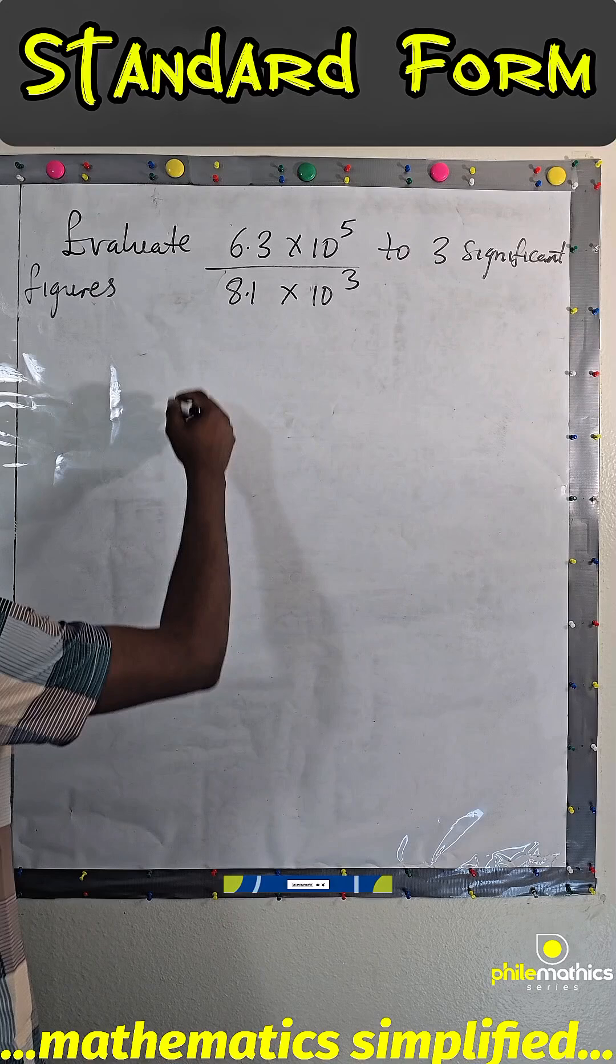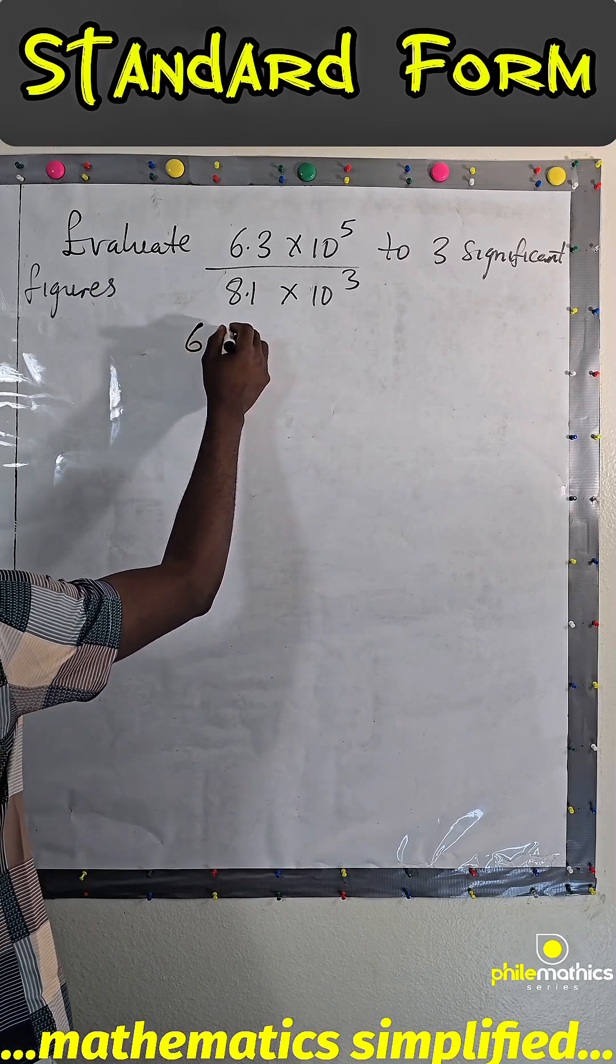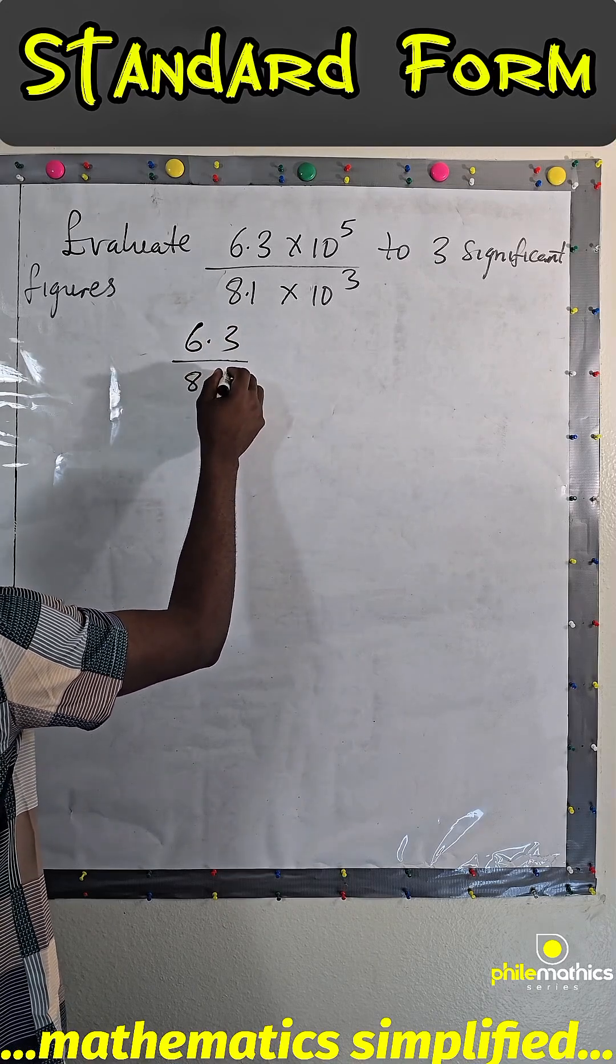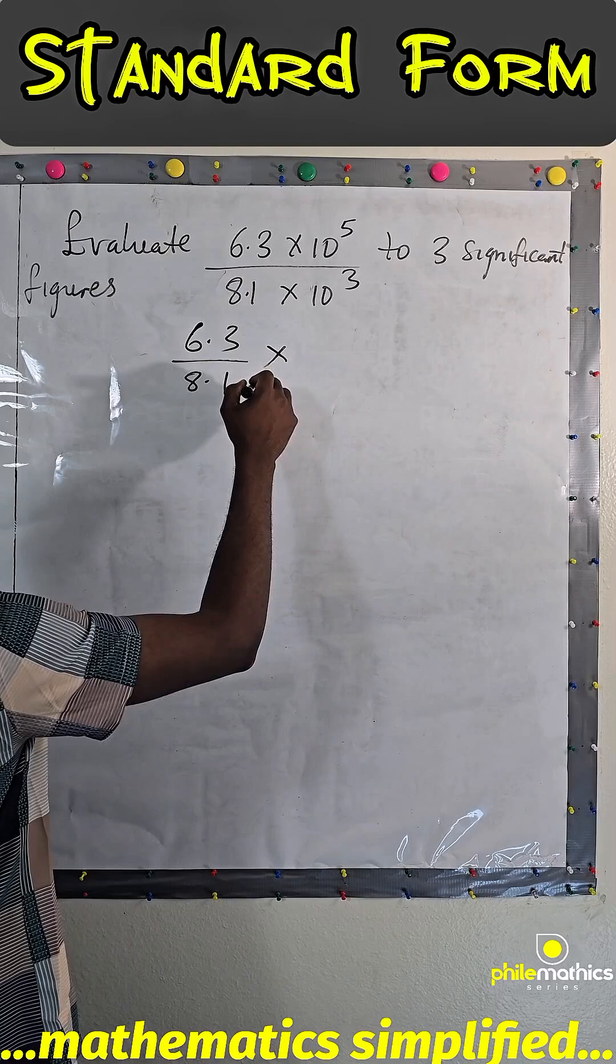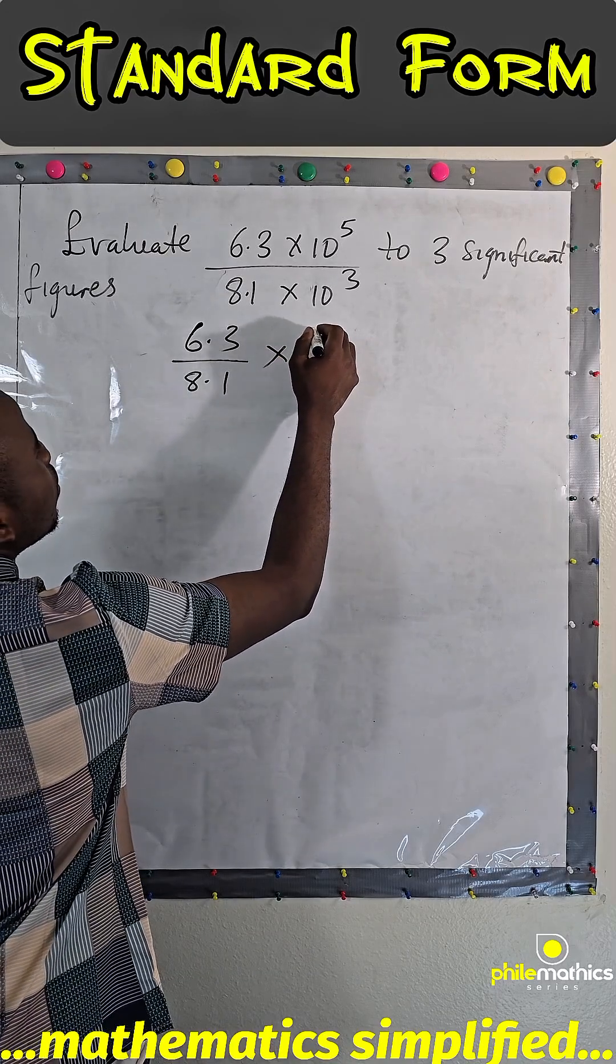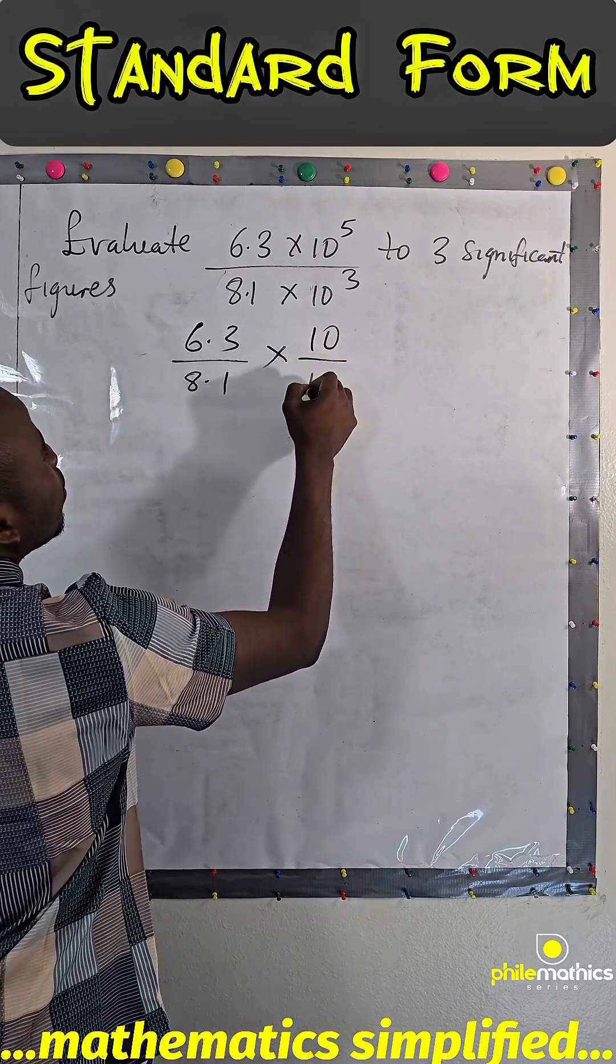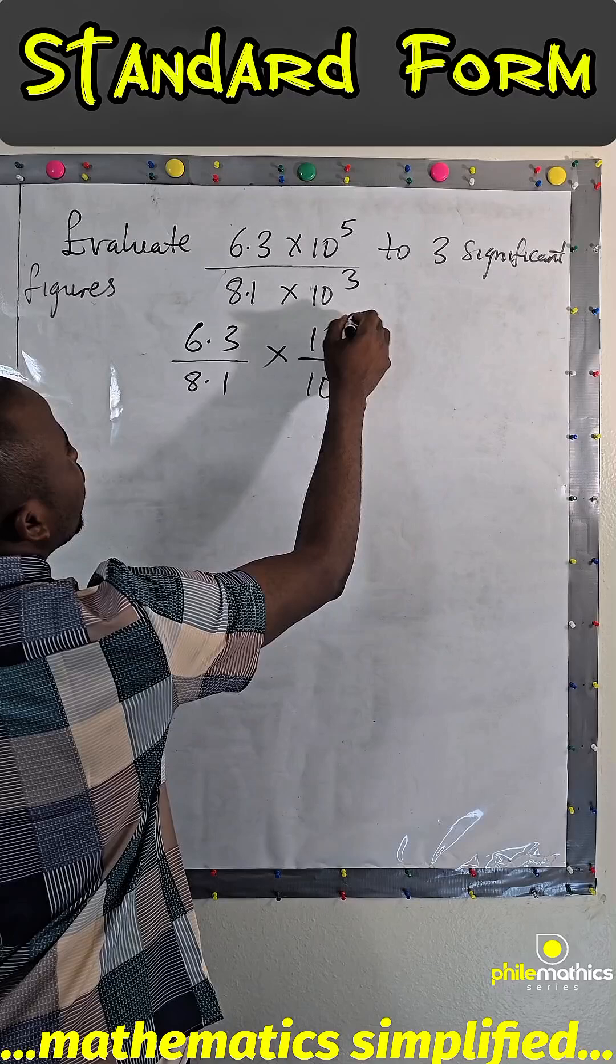What we can do here is we can divide 6.3 over 8.1 and then times it by 10 to the power of 5 over 10 to the power of 3.